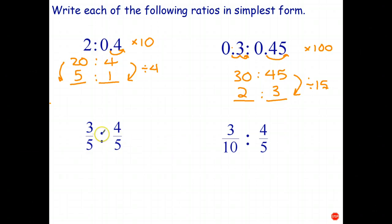This one is fairly straightforward because my denominators are already the same — both fifths — so in simplest form the ratio is 3 is to 4.